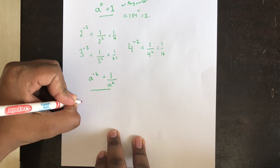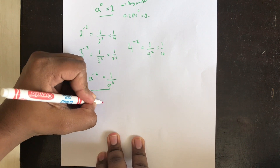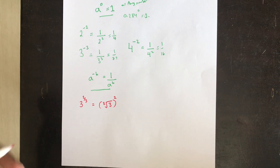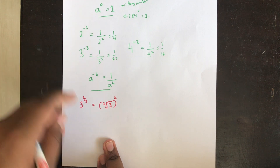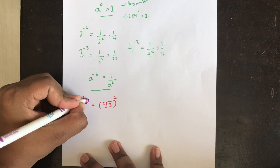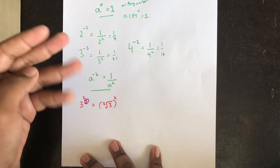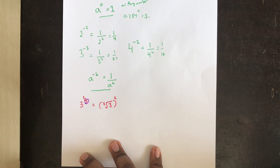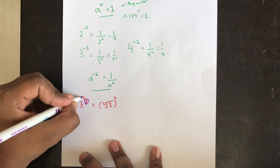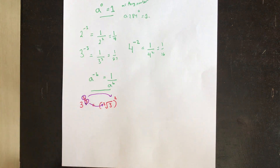Suppose you have something like 3 power 2 over 3, meaning a fraction as the power. You get the cube root of 3 and then square your answer. The denominator of the fraction becomes the root — so denominator 3 means cube root — and if the denominator were 2, it would be the square root. The numerator becomes the power.